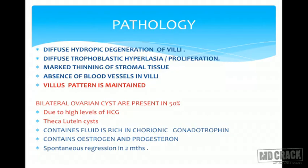Bilateral ovarian cysts are present in 50% of patients. The trophoblast secretes beta-HCG, whose alpha unit acts like LH and TSH. Because of high HCG titers, the ovaries are stimulated, leading to bilateral multicystic enlargement — these are called theca lutein cysts. They contain fluid rich in HCG, estrogen, and progesterone, and regress over one to two months after molar evacuation.